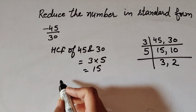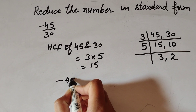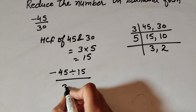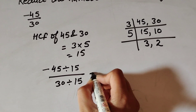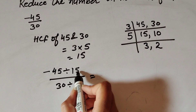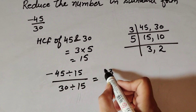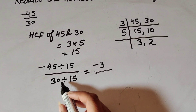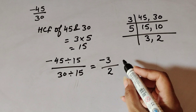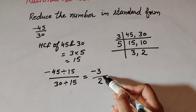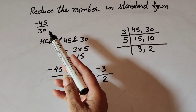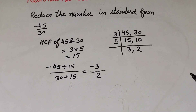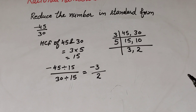We divide the numerator and denominator by 15. -45 divided by 15 gives -3, and 30 divided by 15 gives 2. So -3/2 is the standard form of -45/30. In this result, 1 is the only common factor in numerator and denominator, and the denominator is a positive integer.